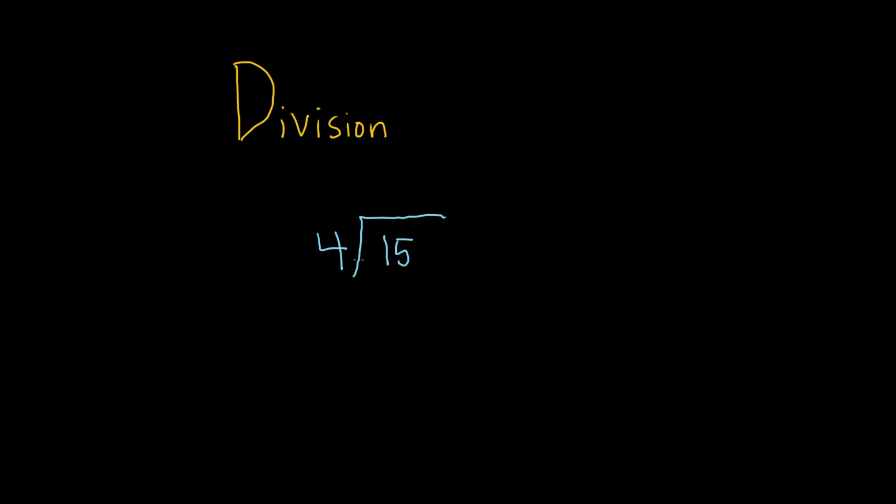So the way it works is, you ask yourself, what's the biggest number that we can multiply 4 by so that the answer is still less than 15? So 4 times 4 is 16, so that's too big, but 4 times 3 is 12. So, we can put a 3 here.